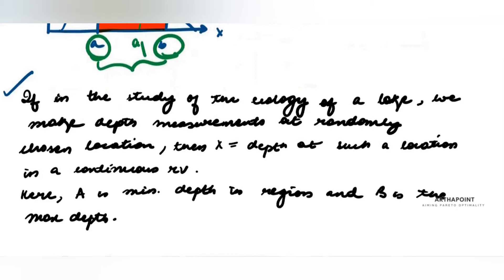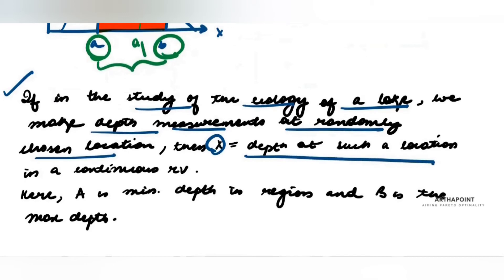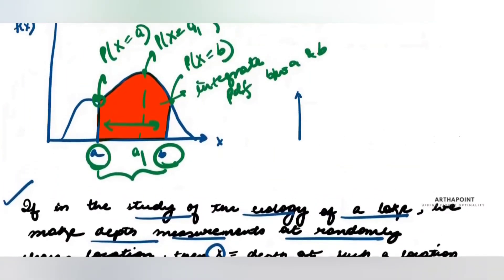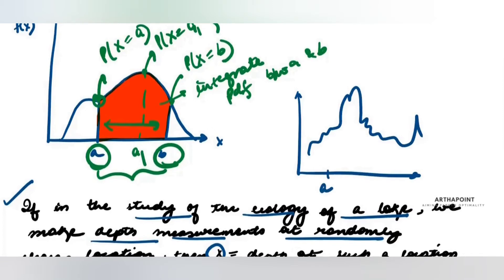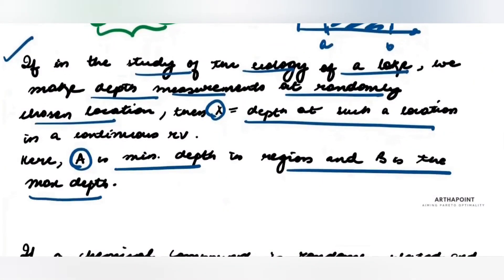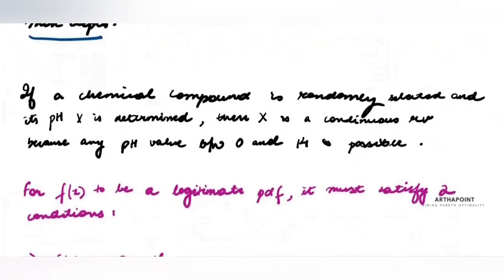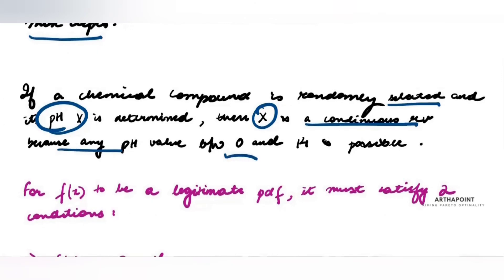Let's take some examples. First, consider the study of the ecology of a lake where we measure depth at randomly chosen locations. X is random in nature — if a is the minimum depth and b is the maximum depth, I can tell you the probability that the depth will be between these two values. Another example: if a chemical compound is randomly selected and its pH is determined, then X is a continuous random variable that can take any value between 0 and 14.